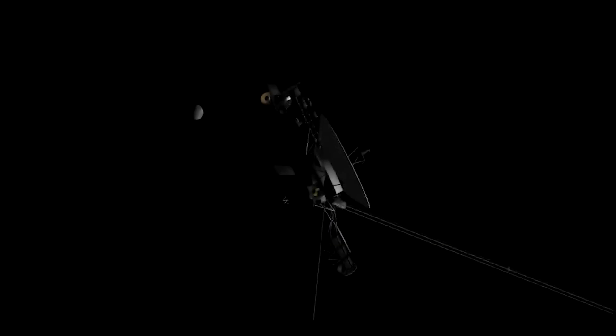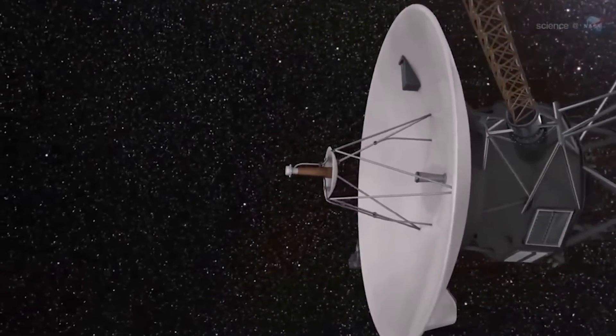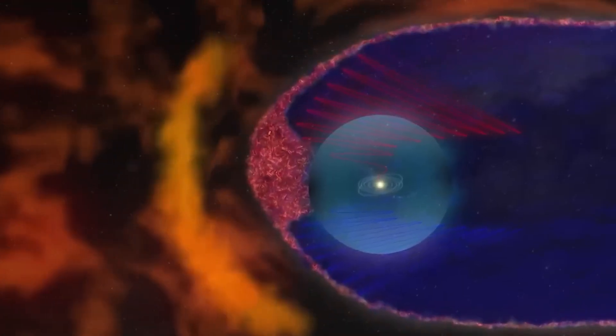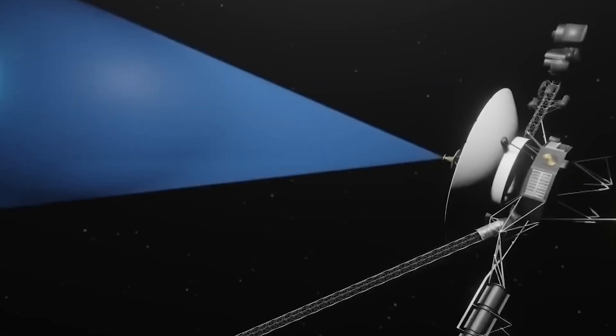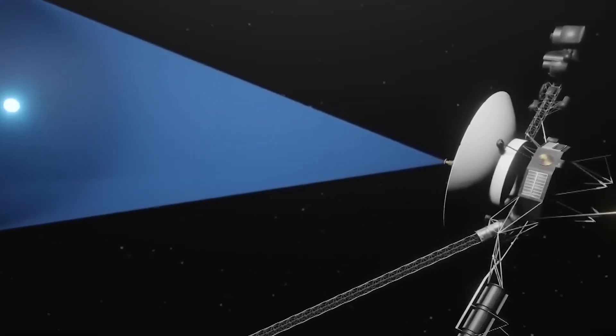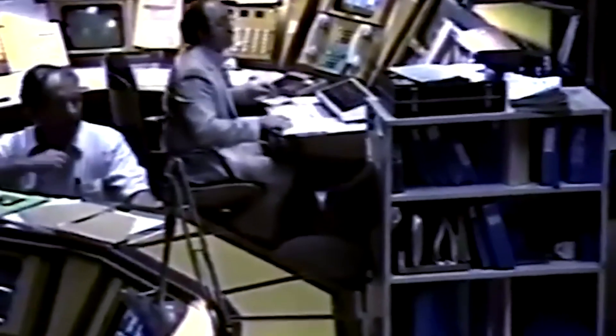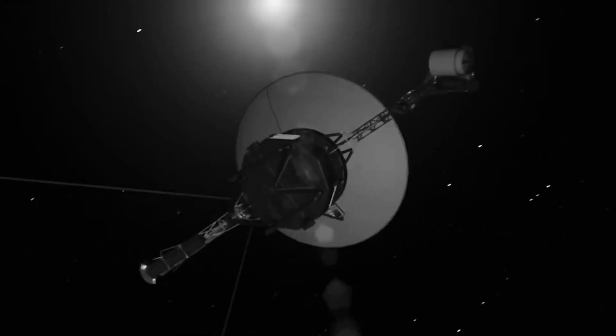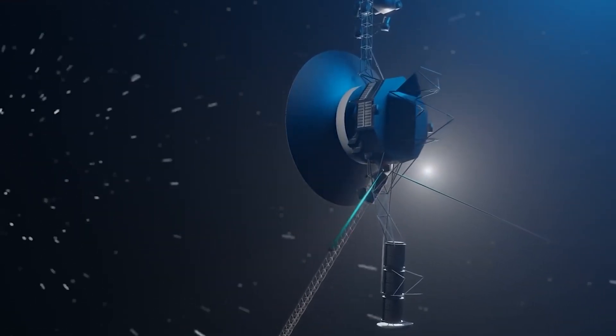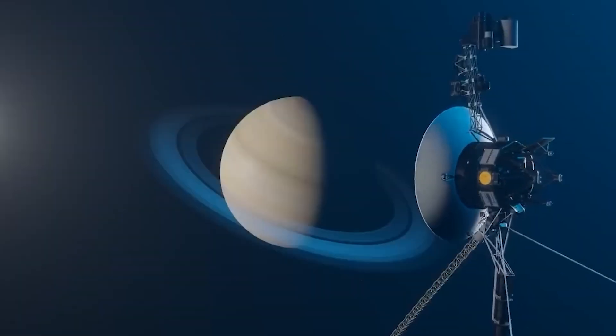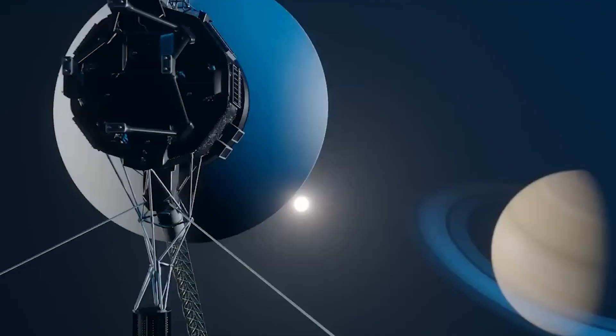However, there was only one problem to consider. Voyager 1 had been built decades ago and had been performing excellently up to that point. Therefore, finding a solution to current problems would be a major challenge. It was necessary for them to review several manuals from the 1970s, and that is exactly what they did. After careful examination, they found a simple solution to the problem by restoring the system responsible for data transmission. In this way, they managed to fix the problem without affecting any other part of the ship.